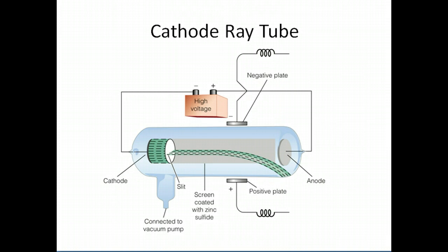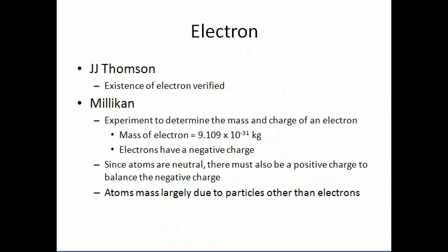This is another picture of a cathode ray tube. In this particular picture, the positively charged plate is on the bottom, but notice that the beam is deflected towards the positively charged plate. This confirmed that these were negatively charged particles, which we call electrons. J.J. Thompson is credited with discovering the electron — or verifying the existence of it.